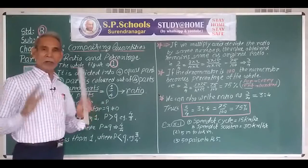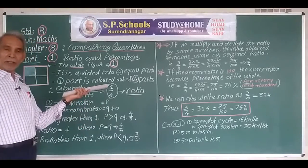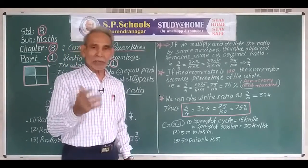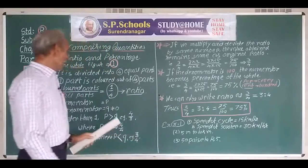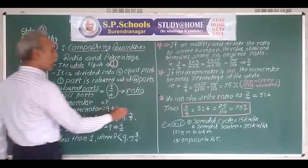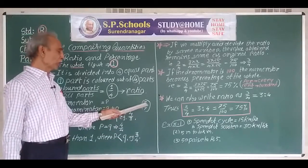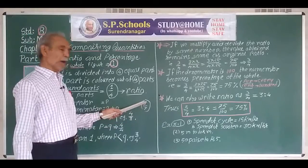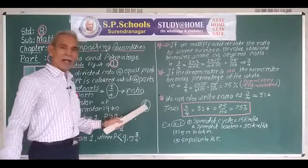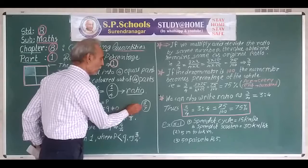Suppose there is ten in the denominator — the whole thing is divided into ten equal parts. The numerator implies that of those divided parts, how many parts we have taken. Suppose there is three upon seven — this means a thing is divided into seven equal parts and three parts are taken.